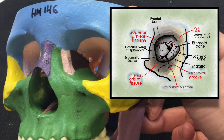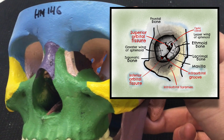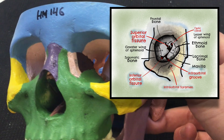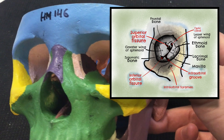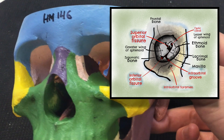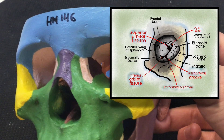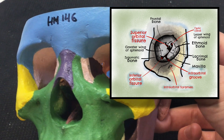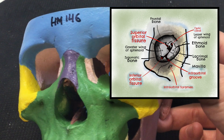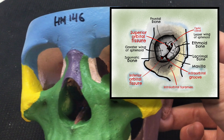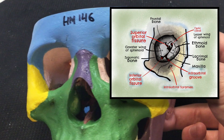We've talked about the optic canal, but there are some others in red here including the superior orbital fissure. We've also got the inferior orbital fissure, and just underneath the orbit we've got the infraorbital foramen as well.